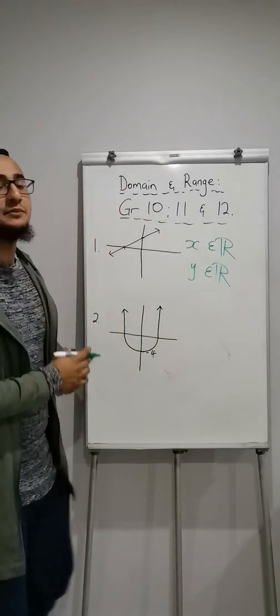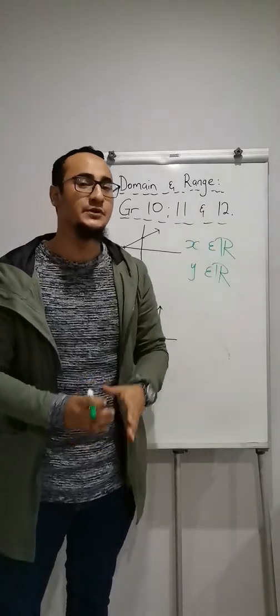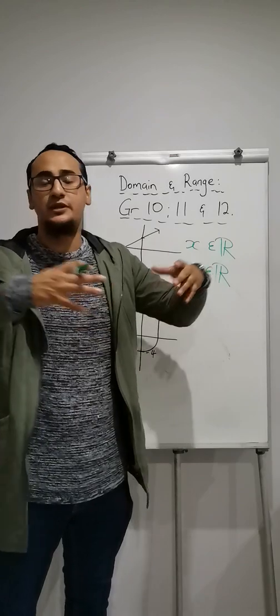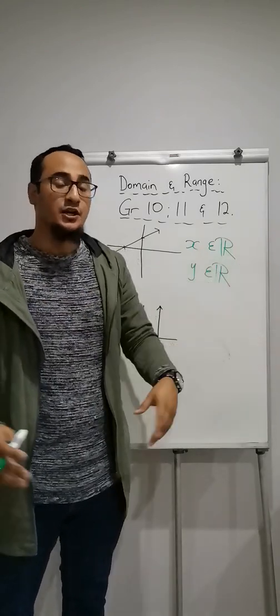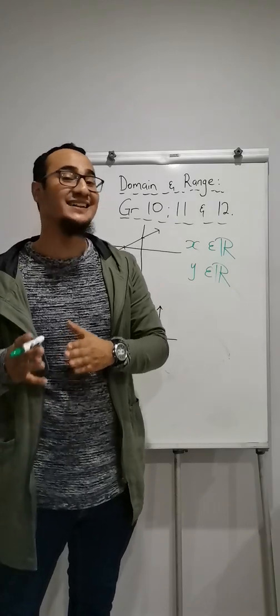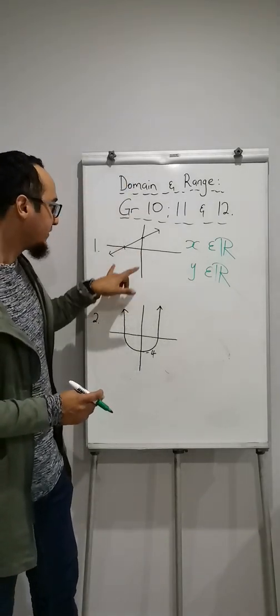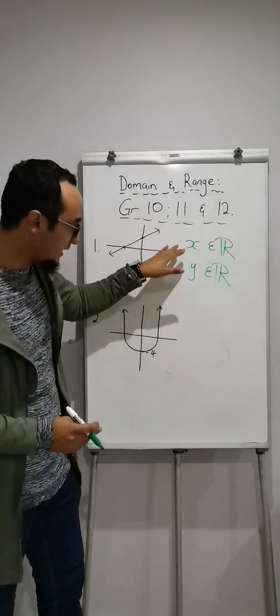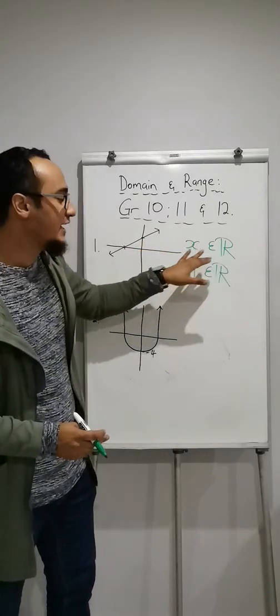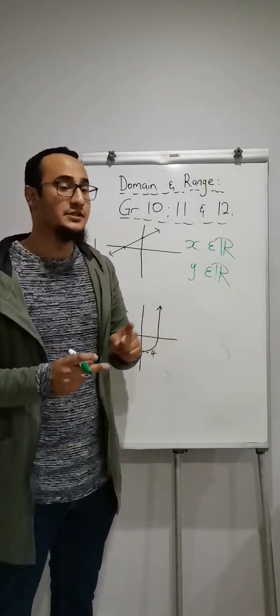Now, element basically means part of. X is a part of real numbers. What is real numbers? All the numbers on the number line, to the left of it, to the right of it, as well as its fractions and decimals. So remember, straight line. If I had these two arrows over here, the domain will be x is an element of real numbers, and the range is y is an element of real numbers.